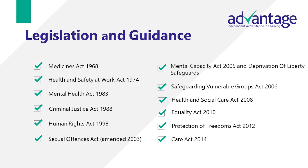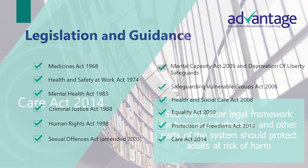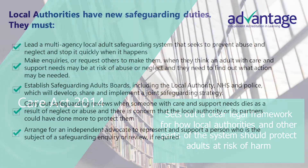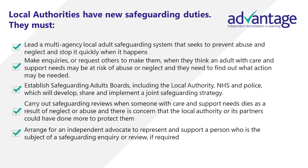The first piece we'll look at is the Care Act of 2014. This sets out a clear legal framework for how local authorities and other parts of the system should protect adults at risk of harm. The Care Act outlines the safeguarding duties of local authorities, including leading a multi-agency local adult safeguarding system that seeks to prevent abuse and neglect and stops it quickly when it happens, and making inquiries when they think an adult with care and support needs may be at risk of abuse or neglect.